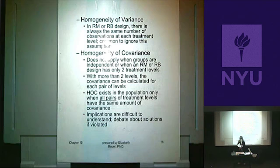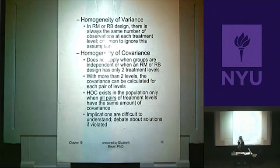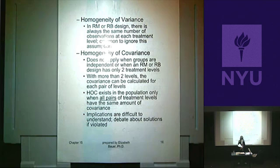Another typical assumption is homogeneity of variance. In a randomized blocks or repeated measures ANOVA, you should always have the same number of people in the cells across all treatments. If you do, homogeneity of variance isn't a problem. So far, none of that is new.